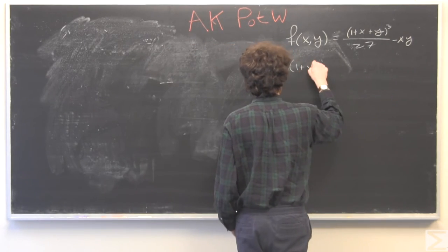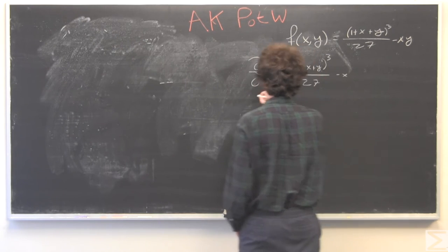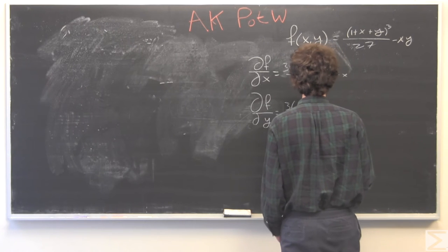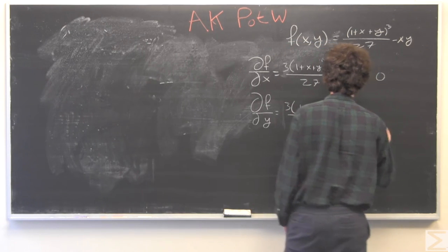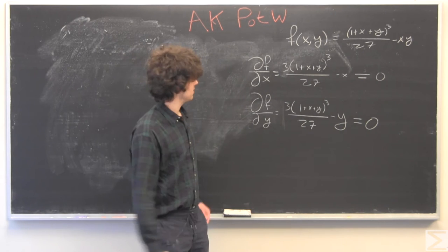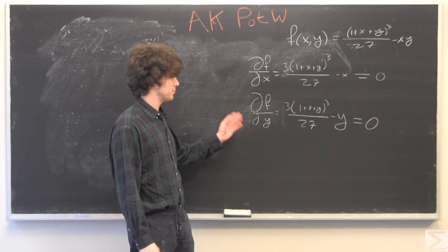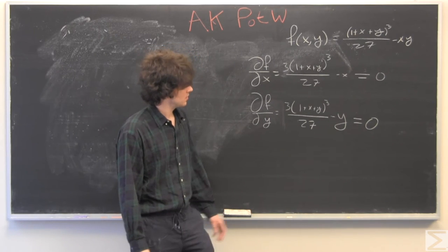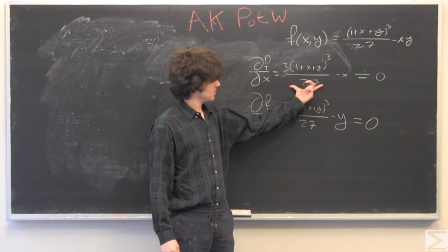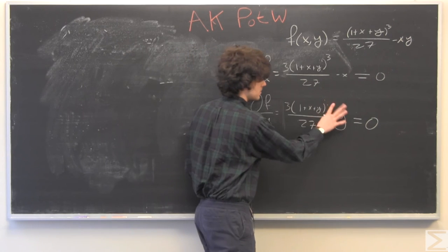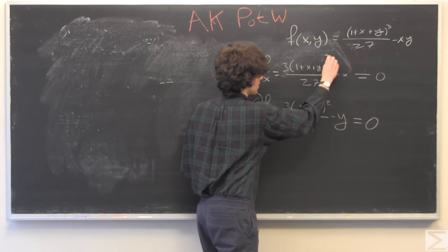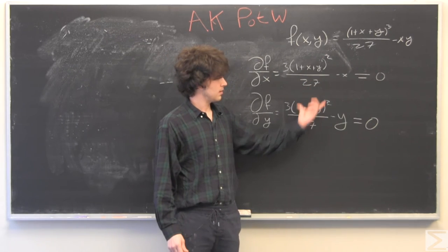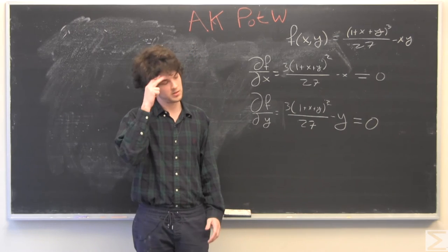So we're going to write this in terms of x. So what we're doing is looking for when the partial derivative with respect to x and with respect to y, when those are both equal to 0. So we notice that these two things are exactly the same.